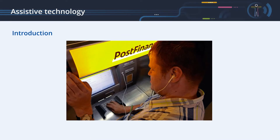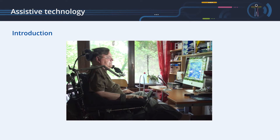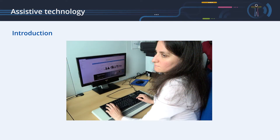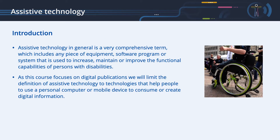Welcome. In this chapter, you will learn about assistive technology. We will see what assistive technology is and how it improves the lives of so many people. Assistive technology in general is a very comprehensive term, which includes any piece of equipment, software program, or system that is used to increase, maintain, or improve the functional capabilities of persons with disabilities.